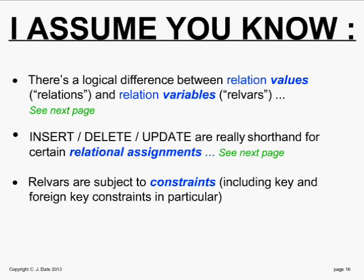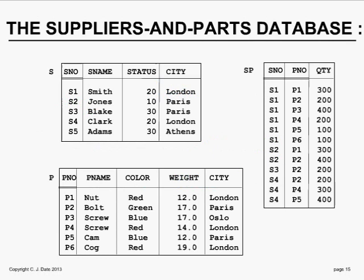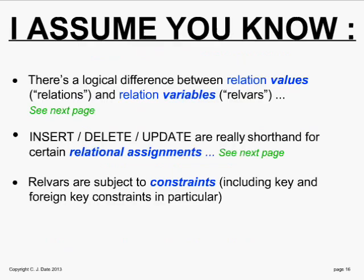I have to explain a little bit of groundwork before I can get into the real substance. First, I assume you know there's a logical difference between relation values and relation variables. What we're looking at in the database is the value at a particular time. If we looked at a different time, after some updates have been done, we would see different values. So these three things I call tables are really variables because their value changes over time — they represent relation variables. Their value at a given time is relation values. So that database contains three relation variables whose value at any given time is three relation values.